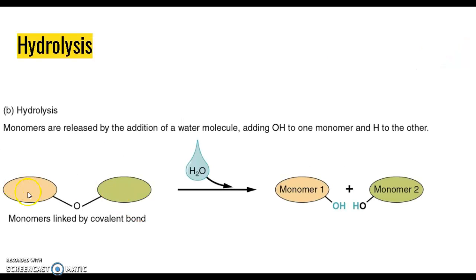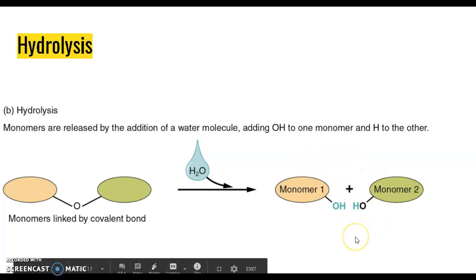We have our two monomers that are joined together by a bond. We add a water molecule. Once that water molecule is added, those two monomers become unbonded. They become individual monomers again.